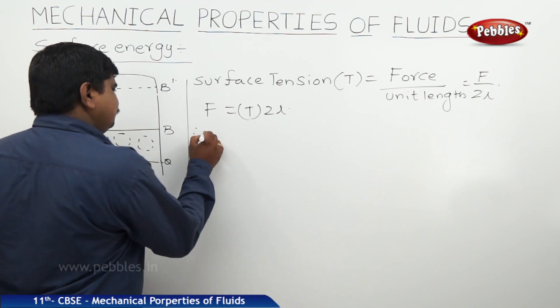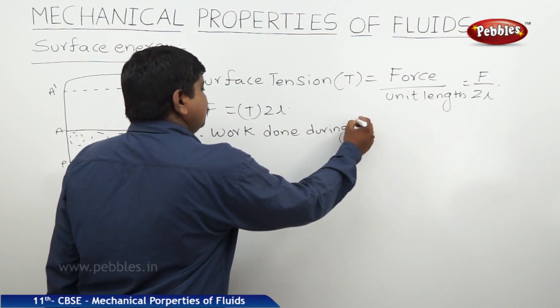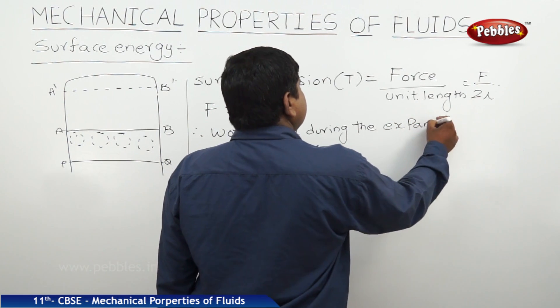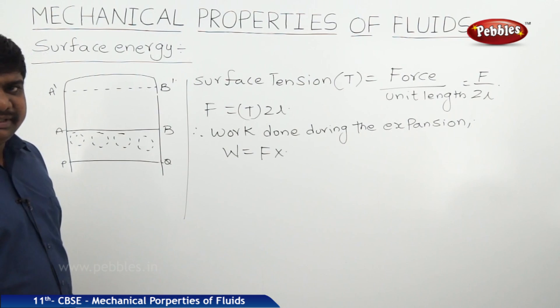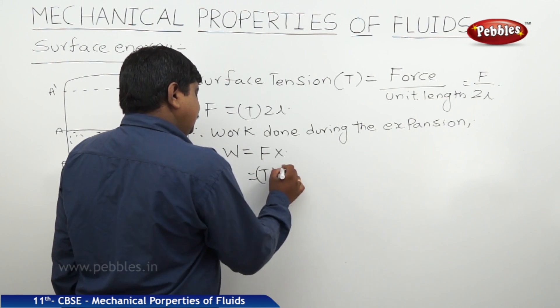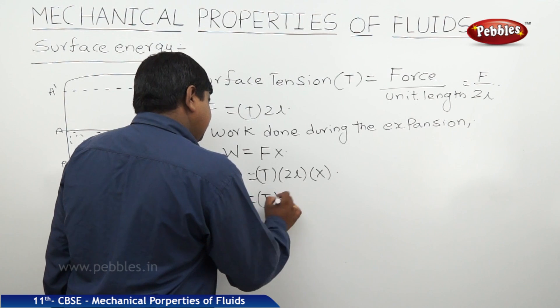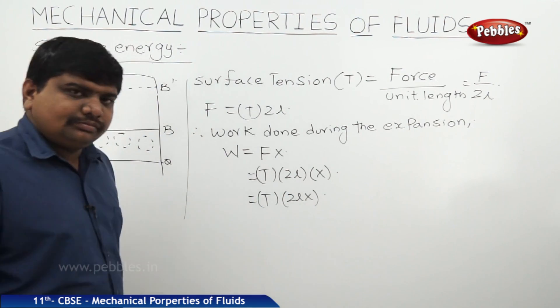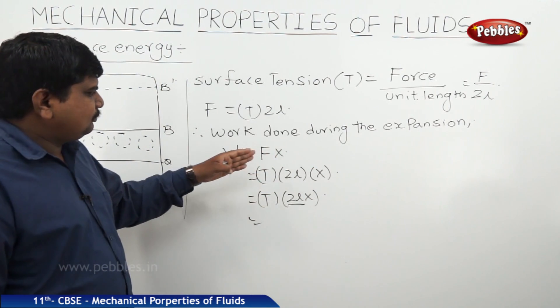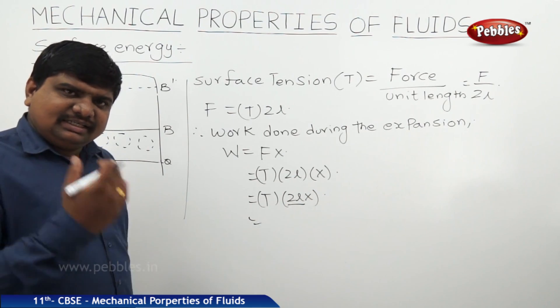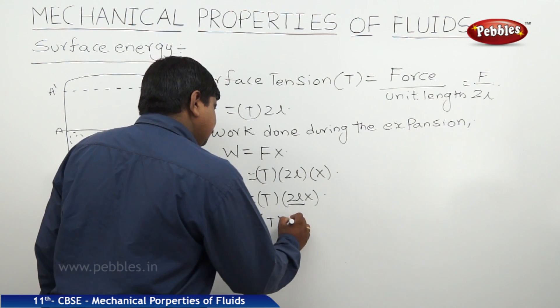Now we will find out the amount of work done. Therefore, work done during the expansion, W is equal to F into x, force into displacement. Where F is equal to T into 2L, so this is surface tension into 2L into x. 2L is the length or displacement of the bubble. X is the displacement. 2L into x, both are in the dimensions of length. Length into length is nothing but the area. Therefore, it is surface tension into area. That is equal to work done.